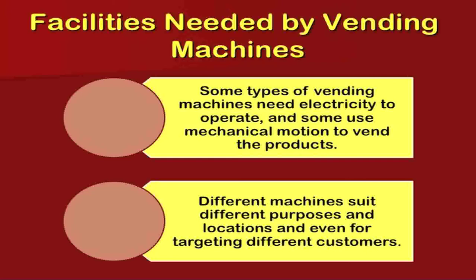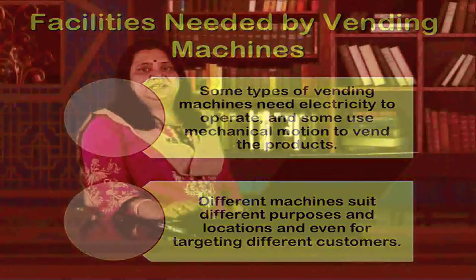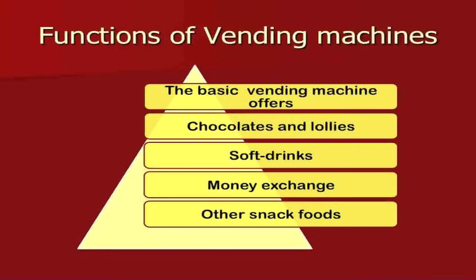Some types of vending machines need electricity to operate, while some use mechanical motion to vend products. Different machines suit different purposes, locations, and target different customers. Most sophisticated, highly technological machines are located in posh areas of cities, governed through CCTV cameras and electricity. Remote locations have mechanical machines that use mechanical power to vend products for customers.